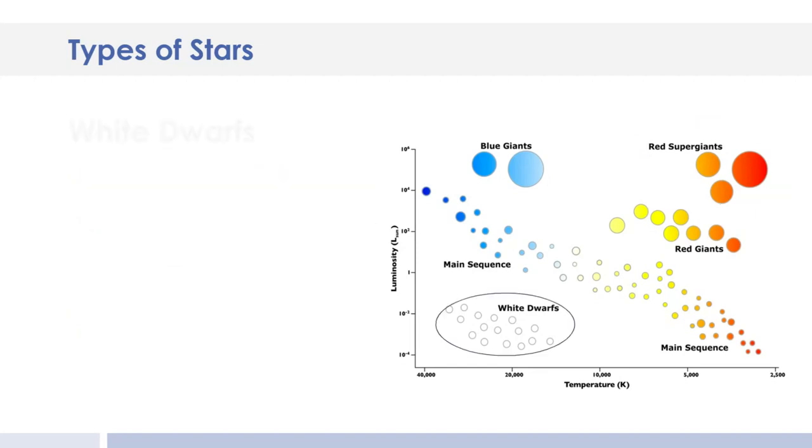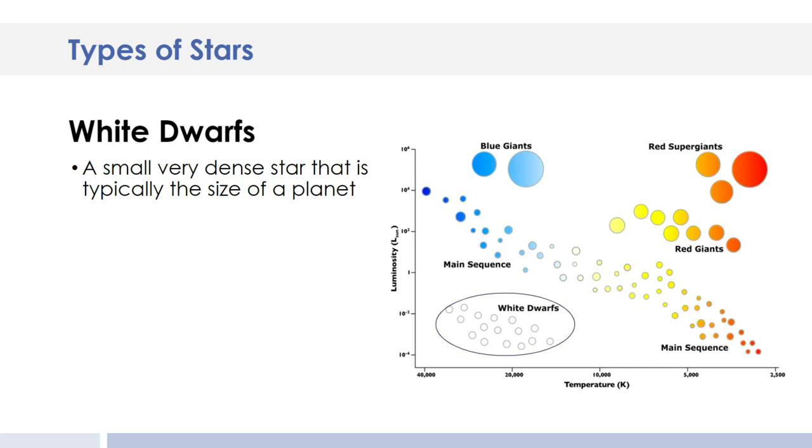Our last section of stars is the white dwarf down here in the corner. The white dwarf is a very small, very dense star, about the size of a planet like Earth. It happens at the very end of a star's life cycle. A low or medium mass star like our sun has used up all of its fuel. So our sun will end its life as a white dwarf.